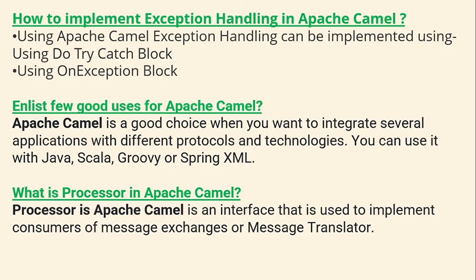How to implement exception handling in Apache Camel? In Apache Camel, exception handling can be implemented using the try-catch block or using the onException block.